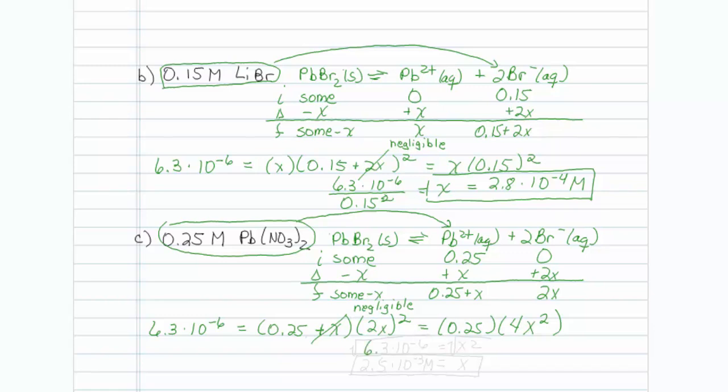So if I can just take 6.3 times 10 to the minus 6, 0.25 times 4 is 1, isn't it? That's equal to x squared. So I will take the square root of both sides. And x turns out to be 2.5 times 10 to the minus 3 molar, which is honestly pretty negligible compared to 0.25. It's in the thousandths place. So that is my molar solubility when I have another common ion, lead 2 plus present. And that's how you do that.